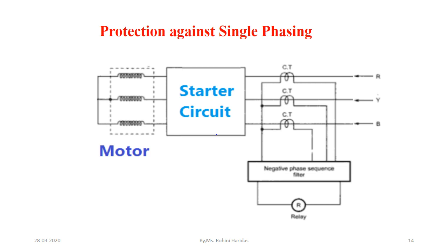CTs are provided in each phase and their secondaries are connected to a negative phase sequence filter. When the supply is balanced, there are no negative sequence components and the relay will not operate. Whenever there is unbalance in supply voltage or single phasing conditions, negative sequence components will flow, and if the value exceeds the preset value, the relay will operate and send a signal to the trip circuit to isolate the induction motor.